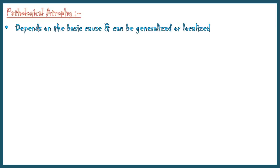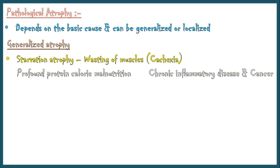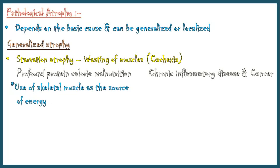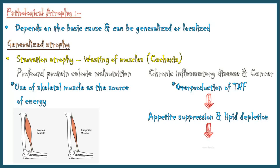Pathological atrophy can be generalized or localized. Starvation atrophy is characterized by wasting of skeletal muscle, also known as cachexia, seen in profound protein-calorie malnutrition, chronic inflammatory diseases, and cancer. In malnutrition, the body uses skeletal muscle as a source of energy, leading to muscle atrophy. During inflammation and cancer, overproduction of cytokines like tumor necrosis factor causes appetite suppression and lipid depletion, resulting in muscle atrophy.